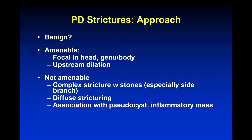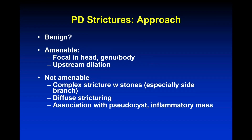Let's talk about PD strictures. The first thing is whenever you see a PD stricture, confirm as best you can that it's benign — imaging, EUS — confirm that you're dealing with something that isn't a cancer. Is it amenable to endoscopic intervention? It should be focal as opposed to diffuse, somewhat close to the papilla, and associated with upstream dilation. Non-amenable would be multifocal strictures, multiple side branch involvement and stones, diffuse stricturing, or an inflammatory mass — that sort of concrete glob in the pancreas head that you're not going to do much with a little bi-French stent.